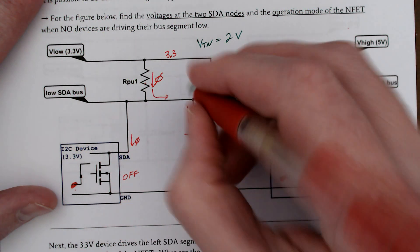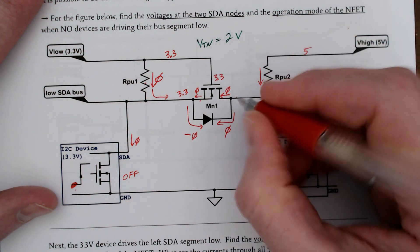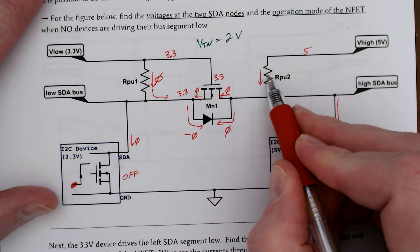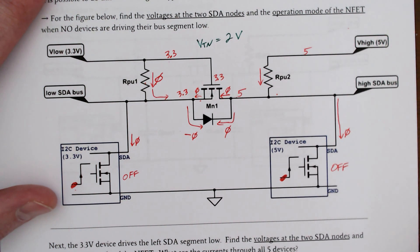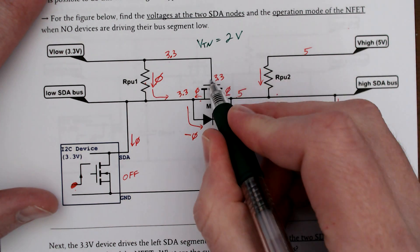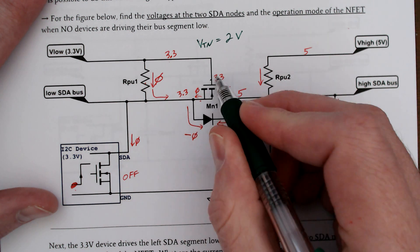All of that said, we get zero current, zero current here, this current is therefore zero by KCL. And if there's no current here we have 3.3 volts, and then on this side there's no current through this resistor, Ohm's law tells us it's 5 volts.